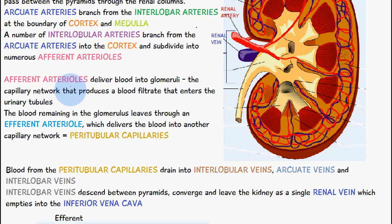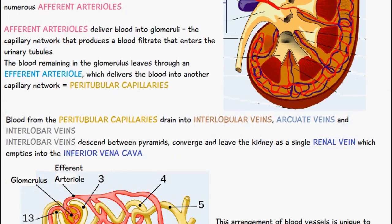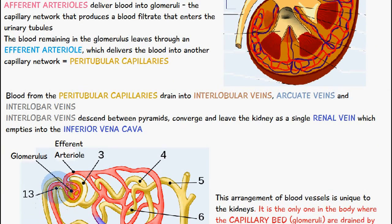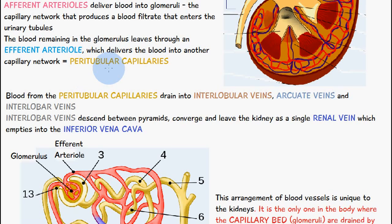The capillary bed, which is the glomerulus, receives blood from the afferent arterioles, and then we have the blood filtrate which is formed and passes through the tubules of the kidneys. The blood which remains in this region is going to go through the efferent arteriole, which delivers blood into another capillary network called the peritubular capillaries.